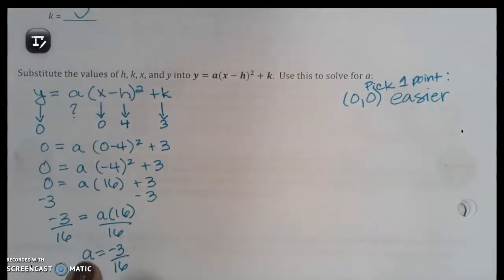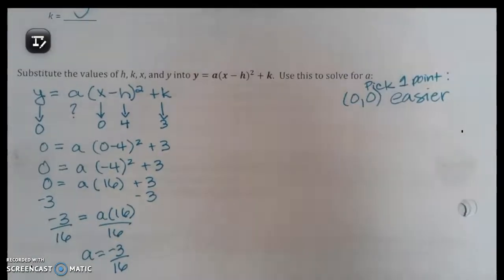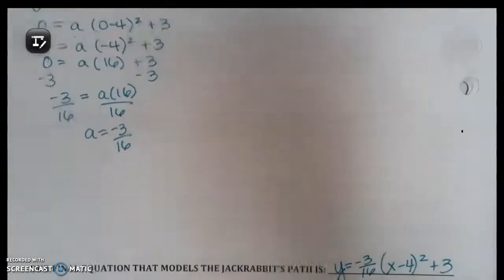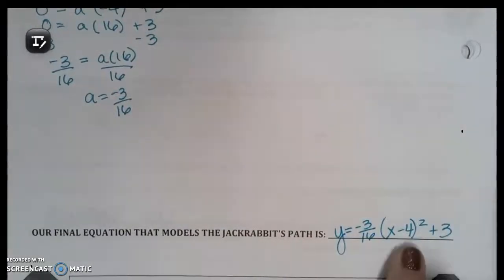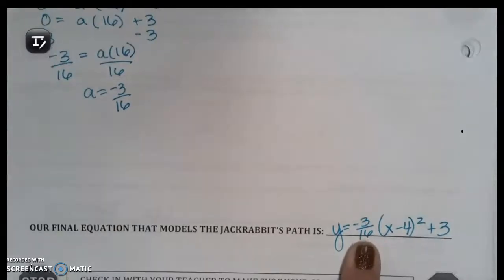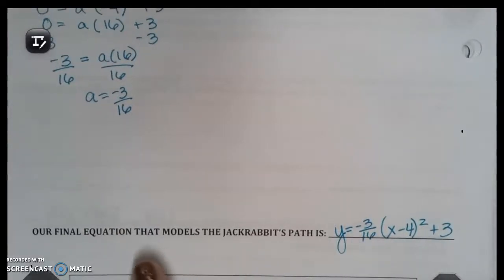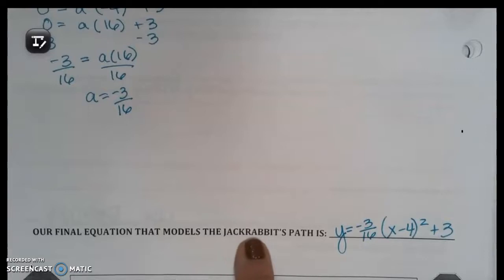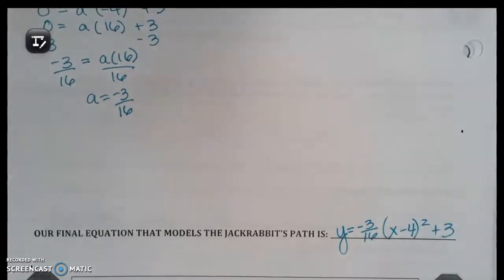Then you're going to subtract 3 from both sides, and then you're going to divide both sides by 16, and you're going to get negative three-sixteenths. That is your a. You already know the h and the k, so when you go to write it as a final equation, you plug in your h and your k, you plug in the a, and you get your jackrabbit's path.